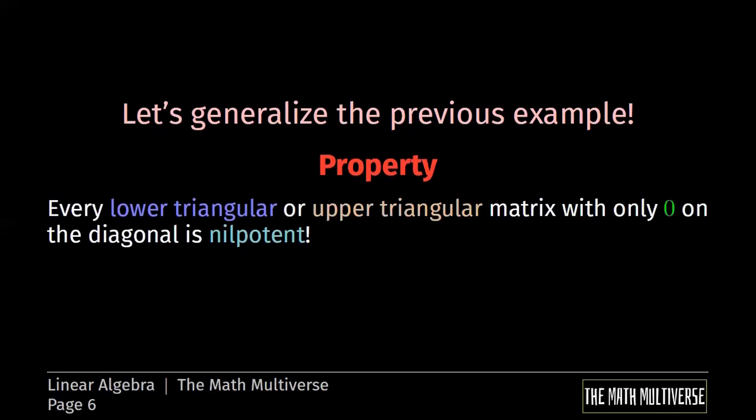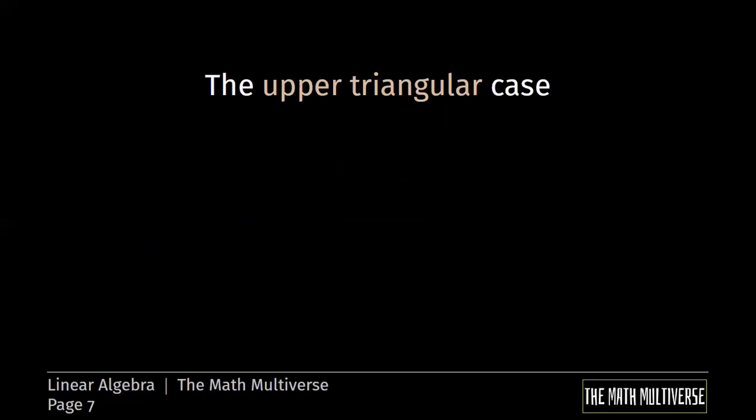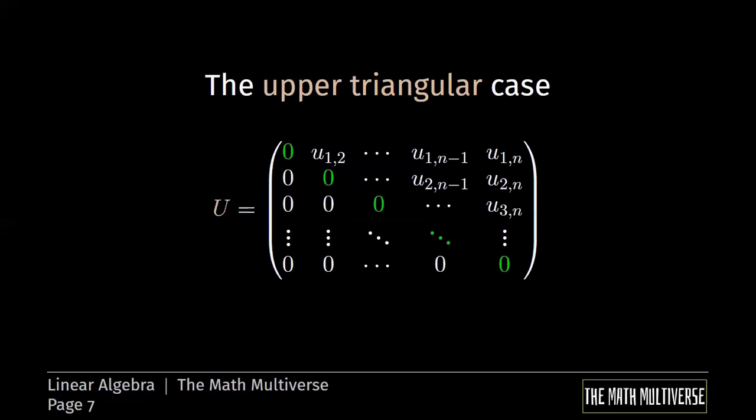Again, if you don't remember what lower triangular and upper triangular mean, don't worry, because I'm going to post again the link of the video where we studied exactly triangular matrices. Let's study the upper triangular case and see how all the upper triangular nilpotent matrices are made. So here we have the matrix U, which is an upper triangular matrix with a particular property that all the elements on the diagonal are all zeros. As you can see, the green diagonal. This kind of matrix is always nilpotent.